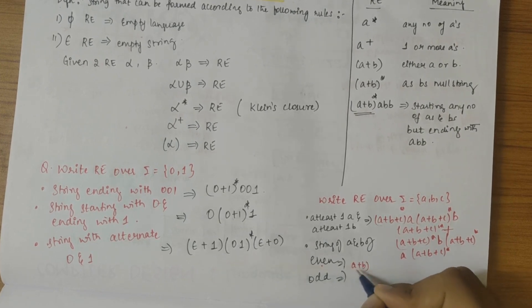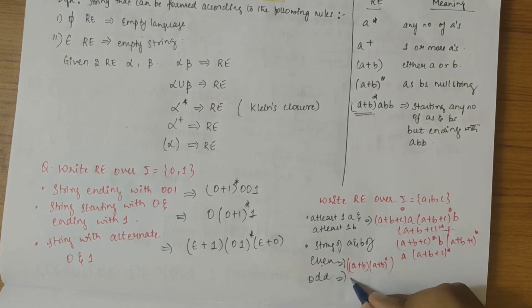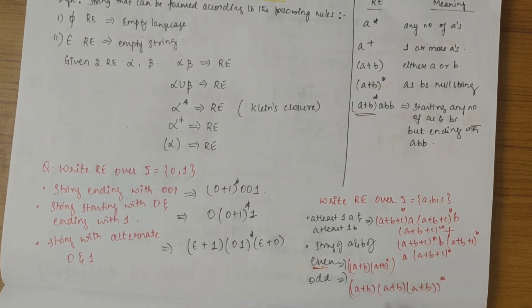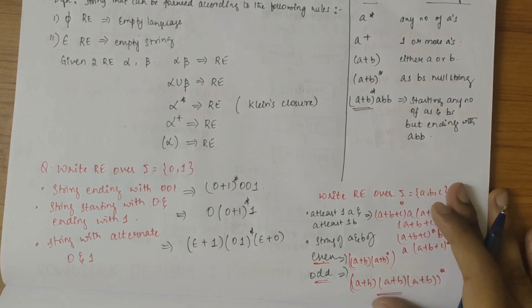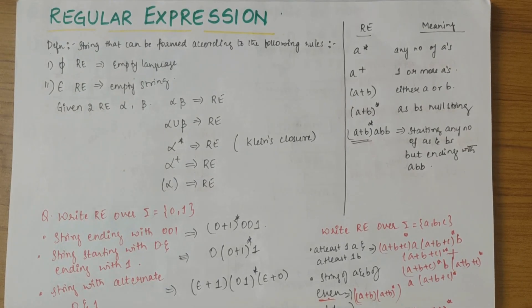For strings of even length, it will be (a+b)(a+b)-star — pairing characters together. Adding one more character turns it to odd length, which is the basic logic. These are the basic regular expressions and their meanings. If you have any doubts, let me know in the comments, subscribe to the channel, and thank you.